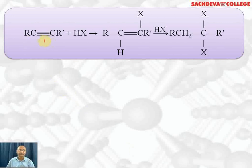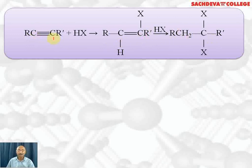For example, with a symmetrical alkyne reacting with HX: X is added to one carbon and H to the other. In the second step, H⁺ is added to the same type of carbon again and X is added to give the final dihalide compound. Since the alkyne is symmetrical, X can be added to either carbon with H on the other — the same product is formed either way, so Markovnikov's rule is not applicable here.